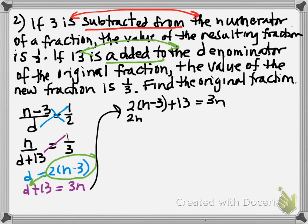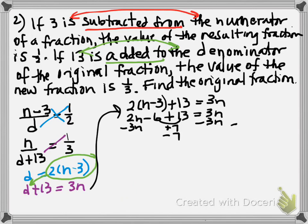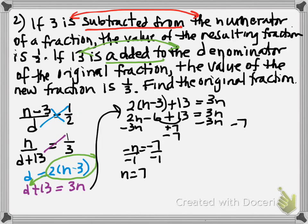Distributing, we get two n minus six plus 13 equals three n. Subtracting three n from both sides, those combine to give positive seven, so subtract seven from both sides to get negative n equals negative seven. Dividing by negative one, n equals positive seven. To find the denominator, plug into the first equation: seven minus three over d equals one-half. Cross products give d equals four times two, or eight. So the fraction is seven-eighths.